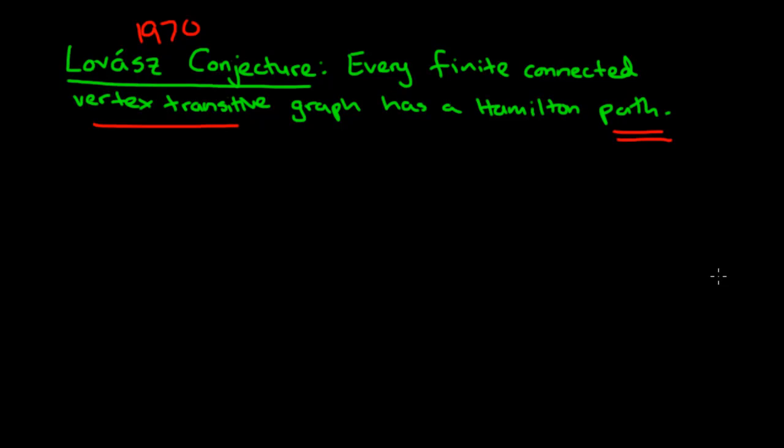In this video, I want to talk a little bit about Hamilton cycles in graphs. I want to start by reminding you that in 1970, Lovász conjectured that every finite connected vertex transitive graph has a Hamilton path.